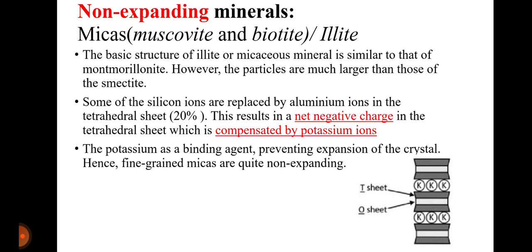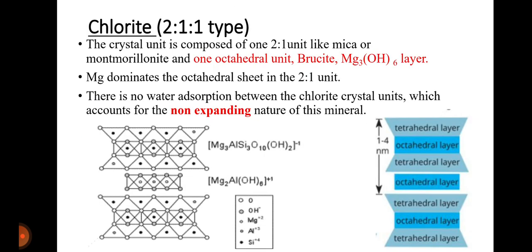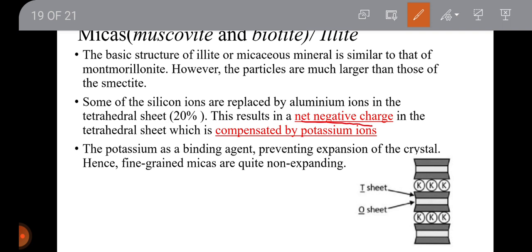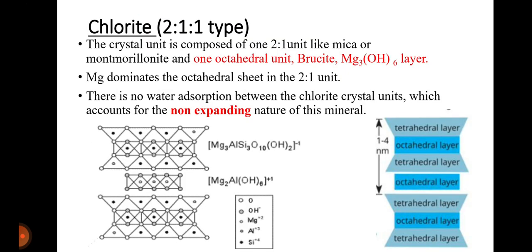Illite and mica are non-expanding type minerals. Their basic structure is similar to montmorillonite, but particles are much larger than the smectite group. Some silicon ions are replaced by aluminium ions in the tetrahedral sheet, resulting in a net negative charge, which is compensated by potassium ions. These potassium ions act as a binding agent and prevent expansion of the crystal, making mica a non-expanding type mineral.